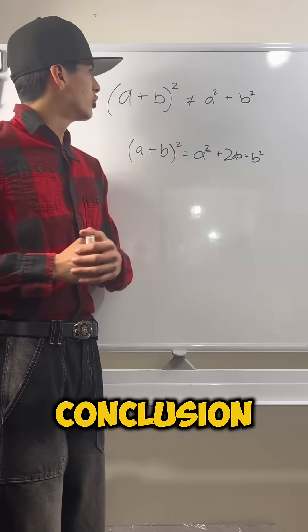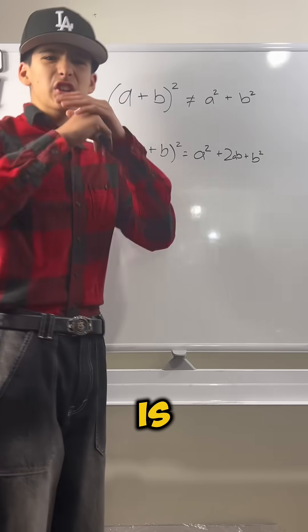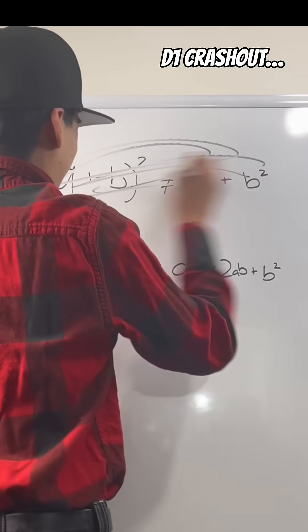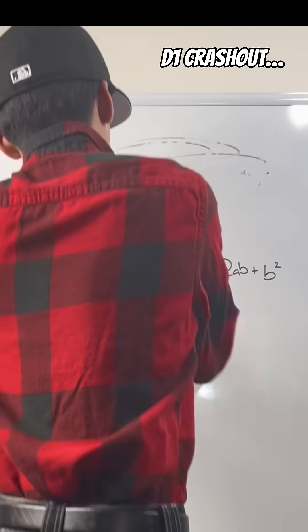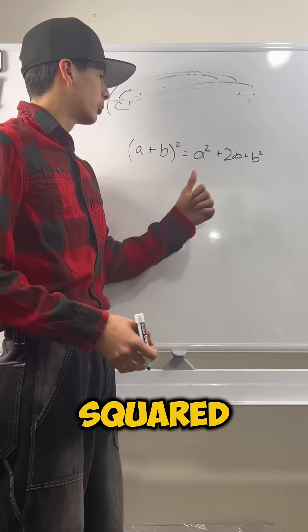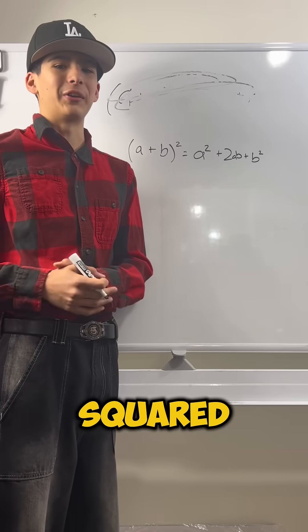So, in conclusion, a plus b squared is not equal to a squared plus b squared. Actually, let me just... a plus b squared is actually equal to a squared plus 2ab plus b squared. God bless.